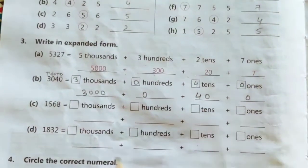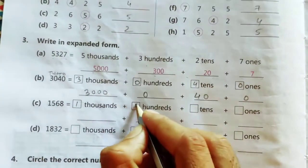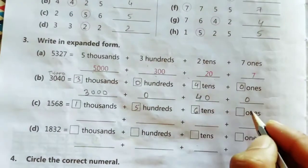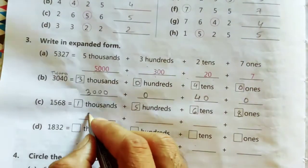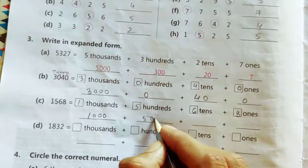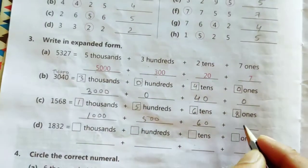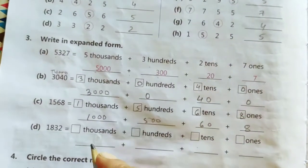Now question number C. 1, 5, 6, 8. So it will become 1000 plus 500 plus 60 plus 8. And the last one.